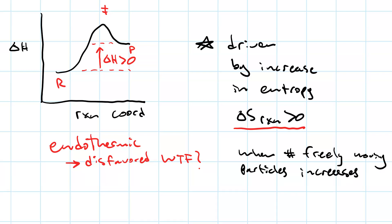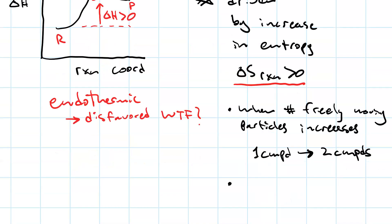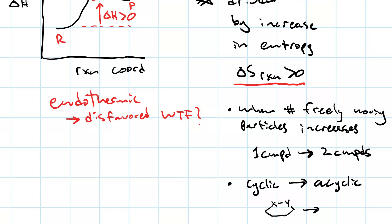So, like in a decomposition reaction, when you have one compound becoming two compounds. It could even be when a cyclic compound becomes acyclic — that adds degrees of freedom. And that increases the entropy.